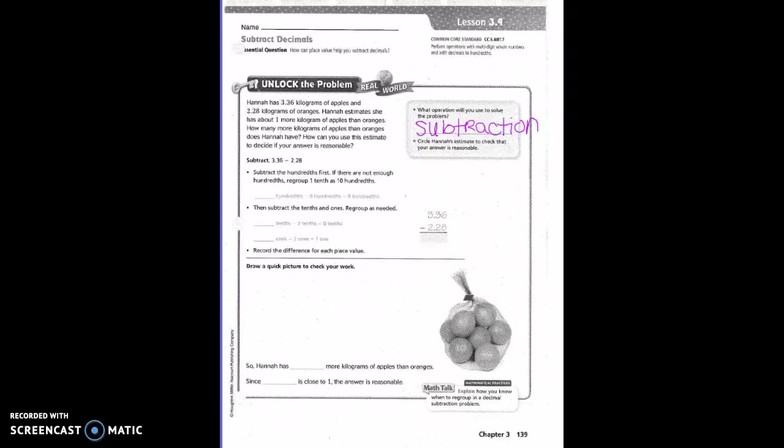Circle Hannah's estimate to check that your answer is reasonable. Her estimate was 1 more kilogram. So subtract the hundredths first. If there are not enough hundredths, regroup one tenth as ten hundredths. Can you take 8 from 6? No. So this becomes a 16, and then the 3 becomes a 2.